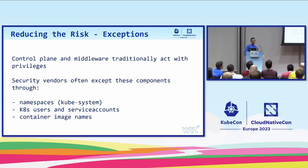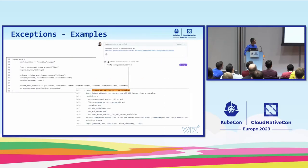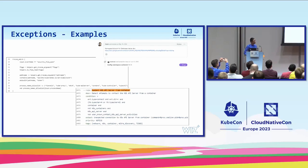What can we do to reduce the risk? Use security vendors — however, the problem with security vendors and control plane middleware is that they typically accept control plane and middleware components, either by kube-system namespace, Kubernetes users, or container image name. For example, a gatekeeper flow that accepts kube-system, a Tracee rule that accepts flanneld and kube-proxy based on process name, and a Falco rule that accepts based on a macro of whitelisted Kubernetes containers.